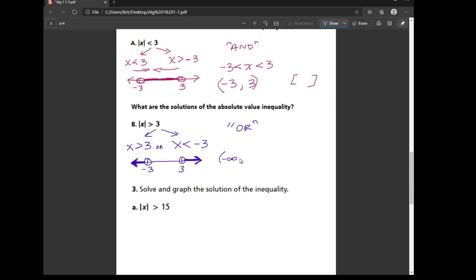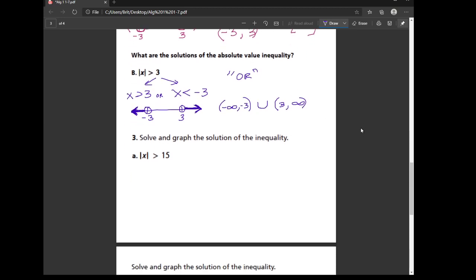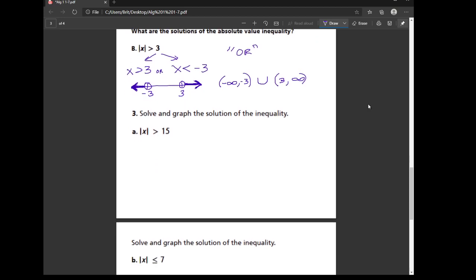You'd say from negative infinity comma negative 3, and then we'd create another one from 3 comma to positive infinity. And in this case when you have them facing out like this using an OR situation, we're going to use the union. So that's it in interval notation if you need it.